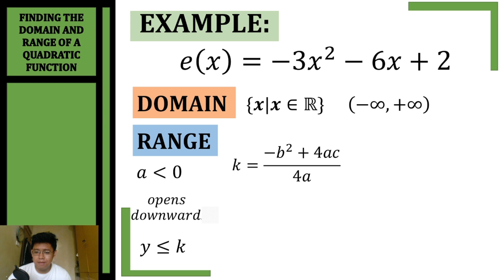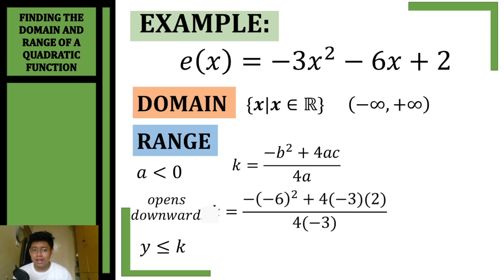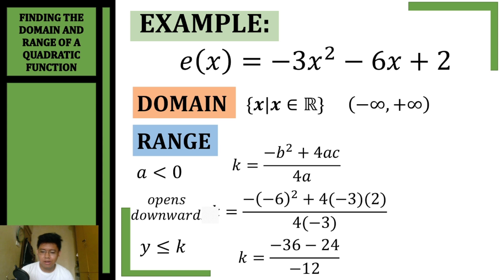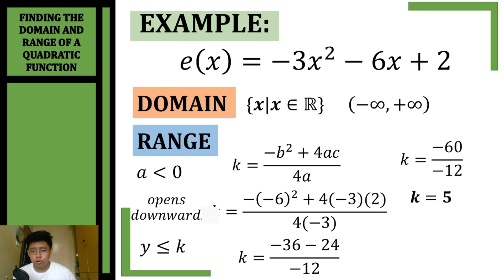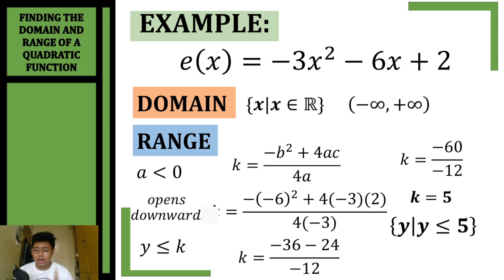To find k, we use the formula k = (−b² + 4ac) / (4a). Substituting: k = (−(−6)² + 4·(−3)·2) / (4·(−3)) = (−36 − 24) / (−12) = (−60) / (−12) = 5. So k = 5. The range is y such that y ≤ 5, or in interval form from positive 5 going to negative infinity.